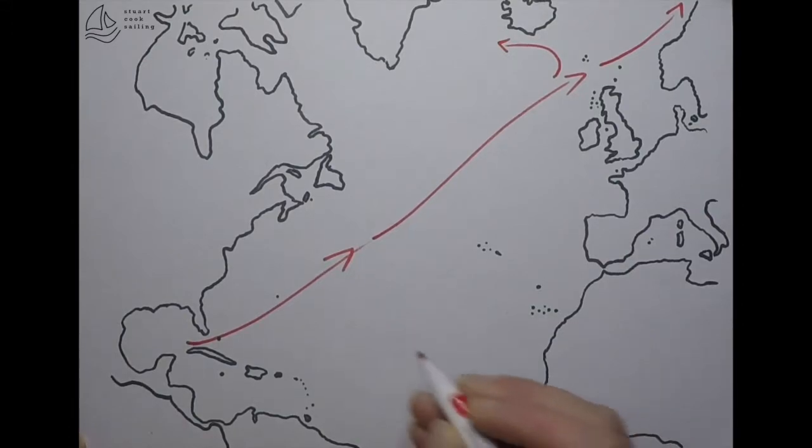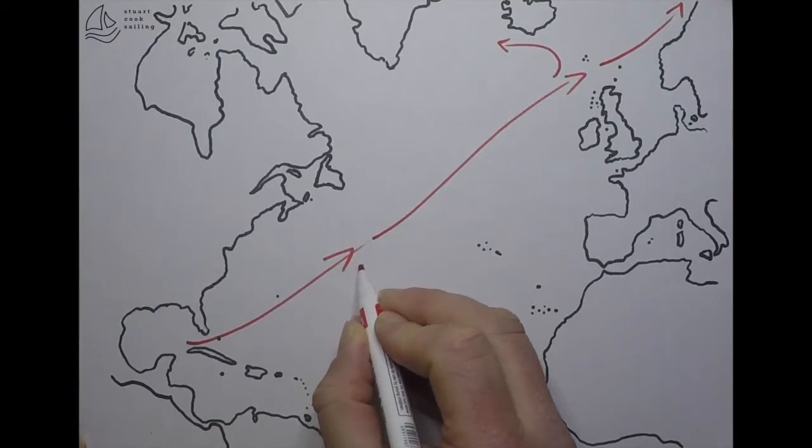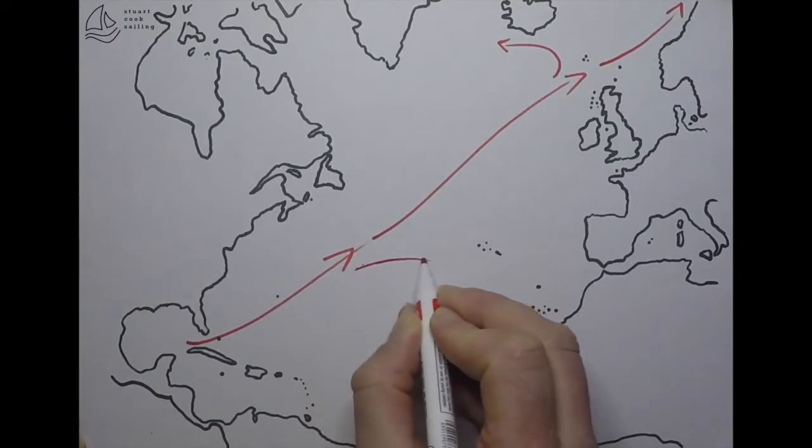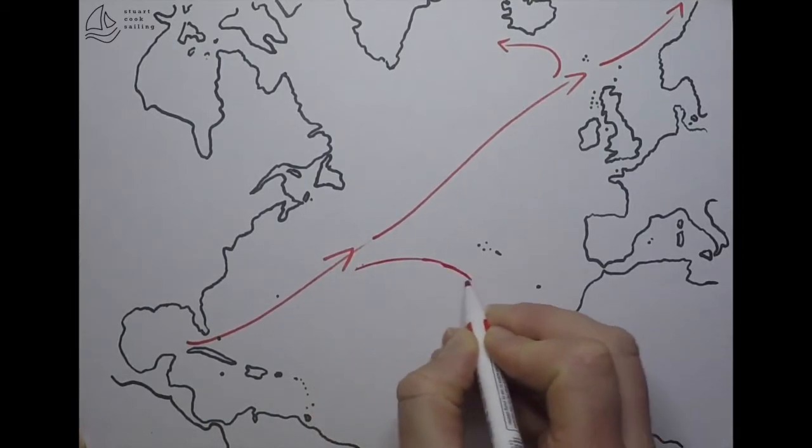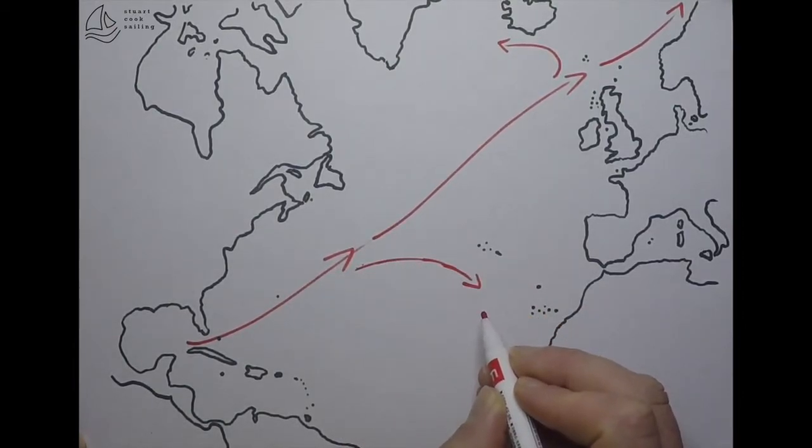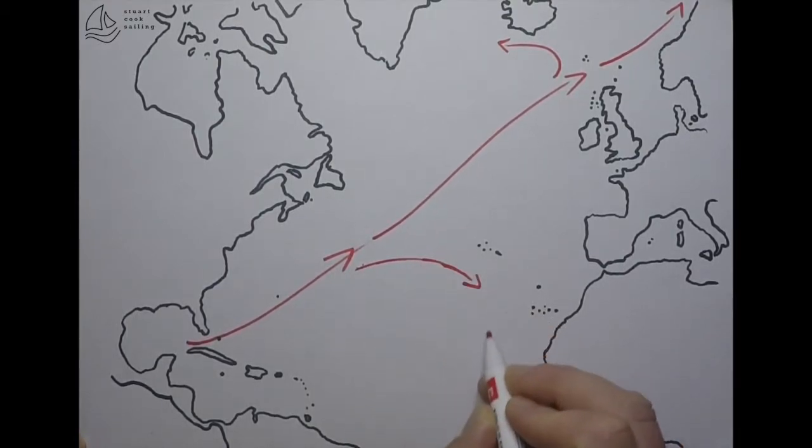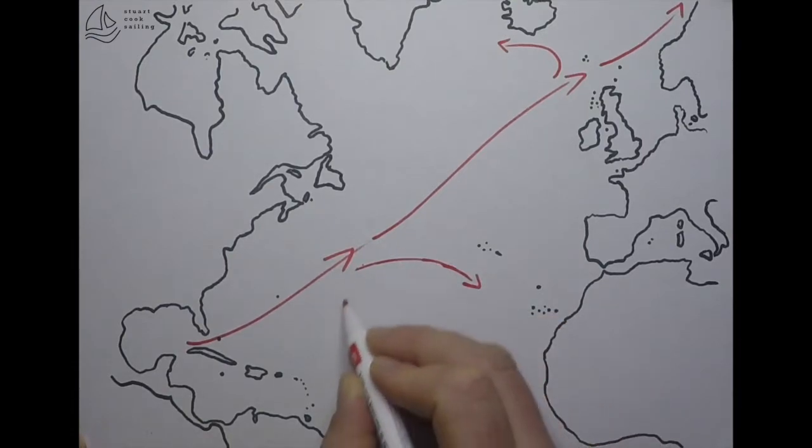We also have a branch further down in the middle of the North Atlantic which circles off as the Azores current. This is basically the current that's getting pulled around off the Azores High here.